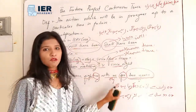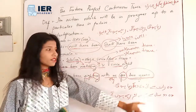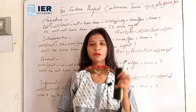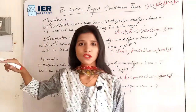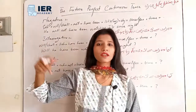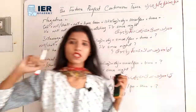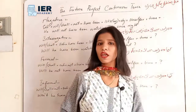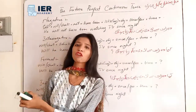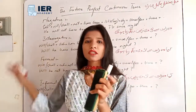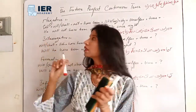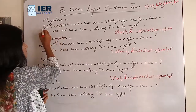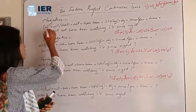This is the usage of since and for, and these are simple sentences — how we build simple Future Perfect Continuous Tense sentences. Now we move to negative, interrogative, formal and informal. For negative sentences, just as we built the formula for simple sentences, we first build the negative formula.